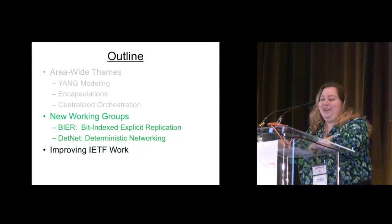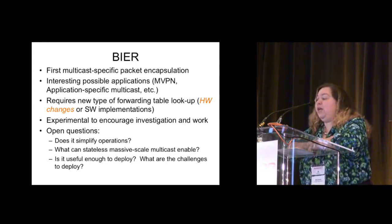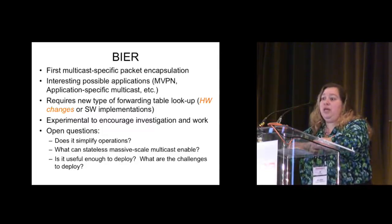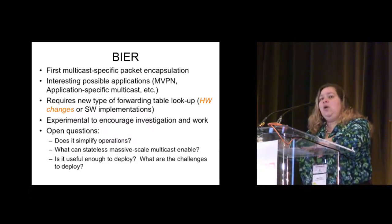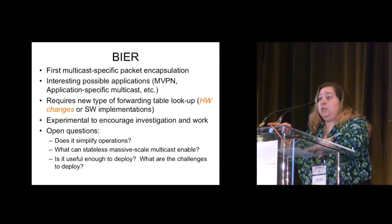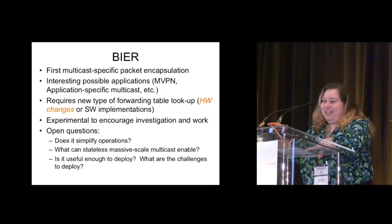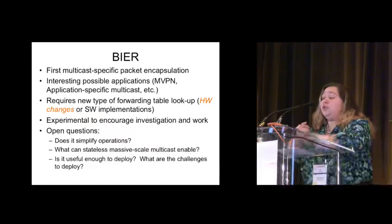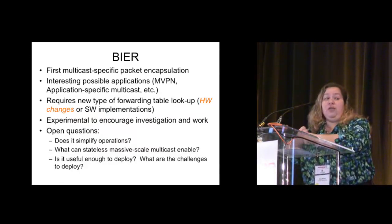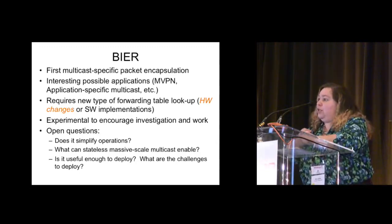Let me tell you about a couple of fun working groups that have gotten started. The first one is BIER. It's the first multicast packet encapsulation I've seen that is multicast-specific. You can use it for interesting things, and it's targeted initially at MVPN. The idea is to remove multicast state and control state from the core of the network. But you can also think about what you could do if your network didn't have to care about massive scale application layer multicast. The work is going ahead as experimental because there are a lot of open questions: does it actually simplify your operations, is it useful enough to deploy, are the gains worth it?